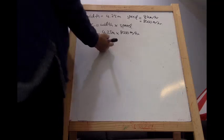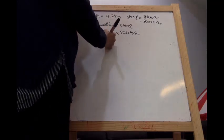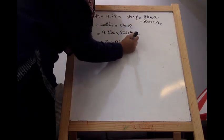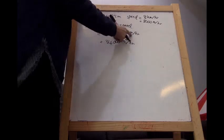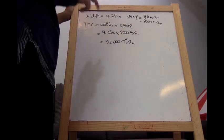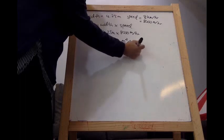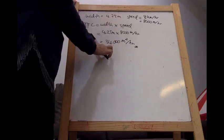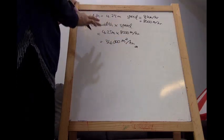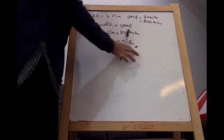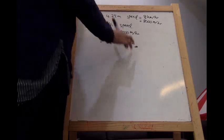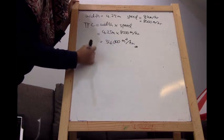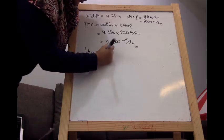This gives an answer of 34,000 meters squared per hour, because you have two units of meters multiplied together. Make sure that you always put the unit at the end of your calculation, because we don't know what the unit is if you are missing it. This result is in meters squared per hour, so we need to convert it to hectares. One hectare is equal to 10,000 meters squared.